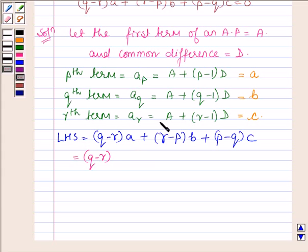so this is equal to (q-r) into a is A + (p-1)D plus (r-p) into b is A + (q-1)D